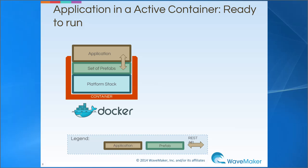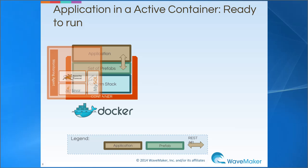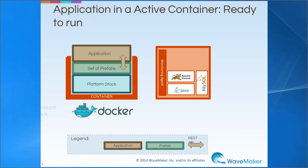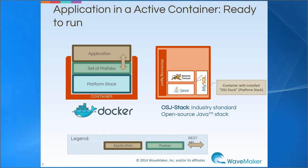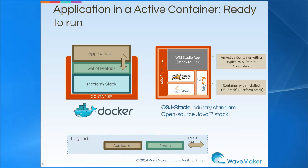As of today, when the studio application is deployed, along with the platform stack, the set of prefabs used by the application is deployed onto one container. The platform stack contains the details pertaining to the software dependencies — in this case, the open source Java stack required by any studio application. Once deployed, an active container with the WaveMaker Studio application along with the platform stack container is activated.